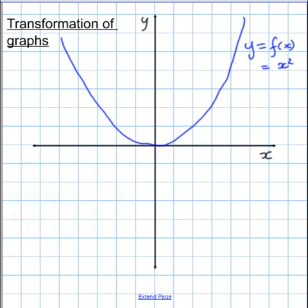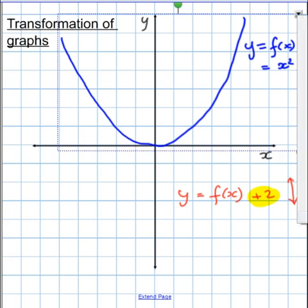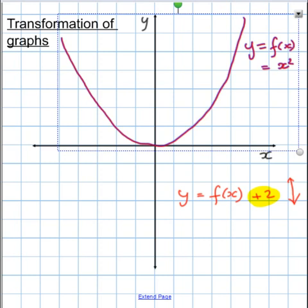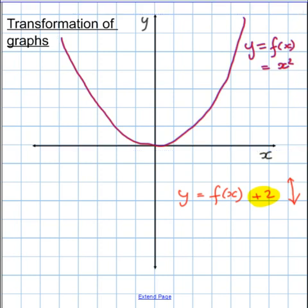So how do we sketch the graph of y equals f of x plus two? Well, we've got a number added and we notice also this added outside the f of x symbols, so we know it's going to affect the graph vertically and it's nice and straightforward. Outside the brackets it moves the graph as it stands so it would be two units up.